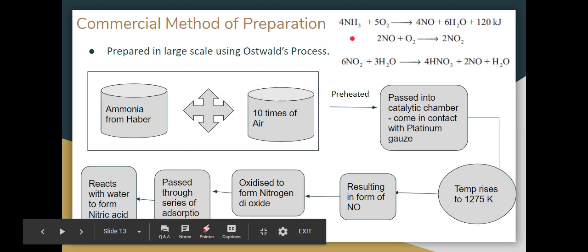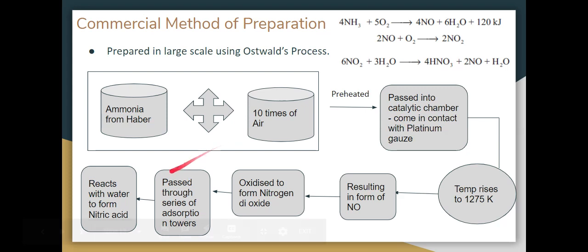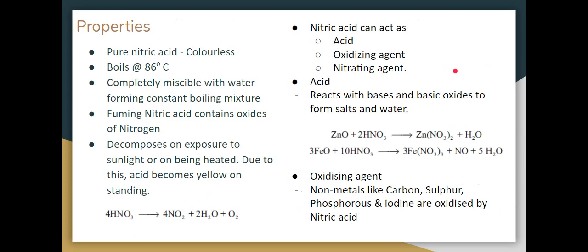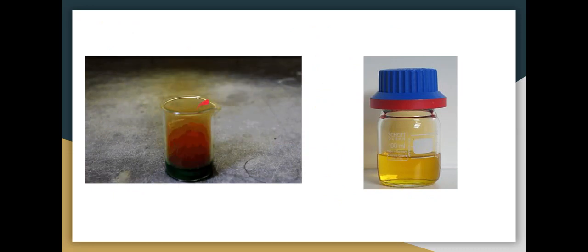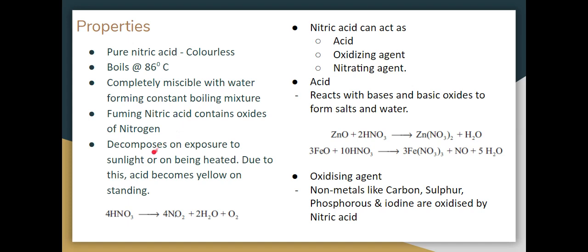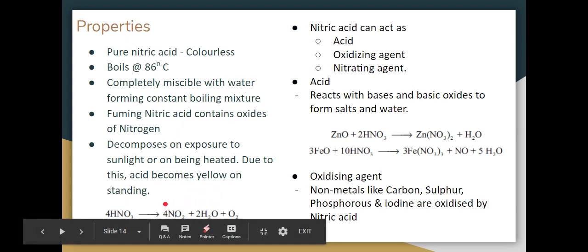The formed nitrogen dioxide is absorbed in an absorption tower to form nitric acid. Nitrogen oxide is oxidized to nitrogen dioxide, which reacts with water to give nitric acid. Nitric acid properties: Pure nitric acid is colorless and boils at 86 degrees Celsius. It's completely miscible with water. Fuming nitric acid contains oxides of nitrogen and appears as an orange color gas. Nitric acid decomposes to yellow color, so it's stored in dark bottles.